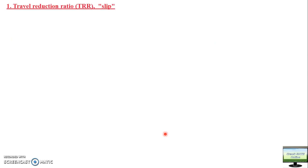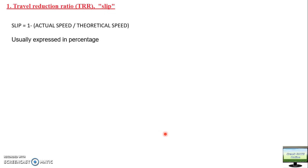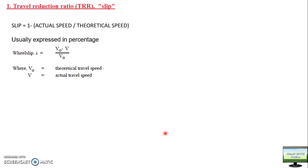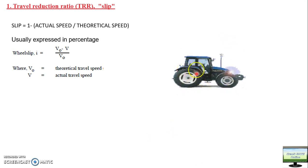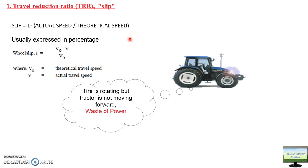The first parameter is the Travel Reduction Ratio (TRR), also known as slip. Slip is basically the percentage difference between theoretical speed and actual speed. Actual speed is always less than theoretical speed. For example, if theoretical speed is 10 km/h and slip is 15%, calculate the actual speed. The formula is: slip = (V₀ - V) / V₀ × 100, where V₀ is theoretical speed and V is actual speed.